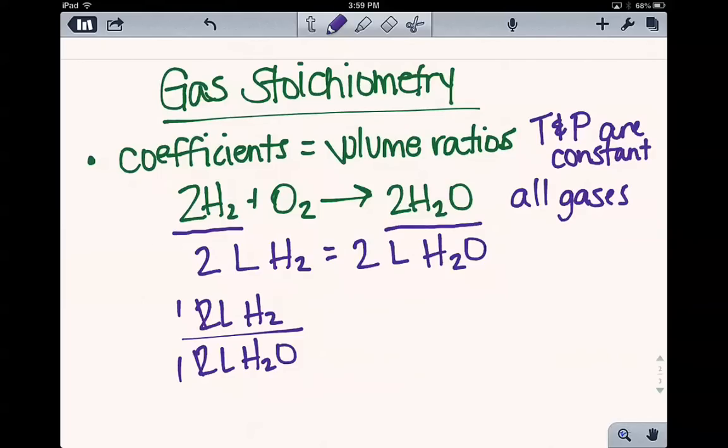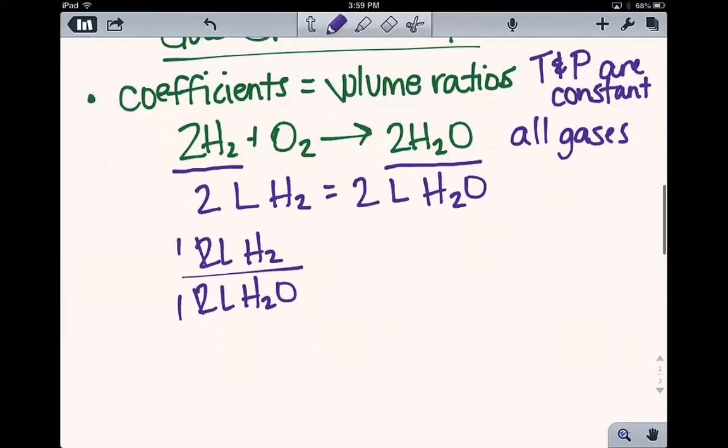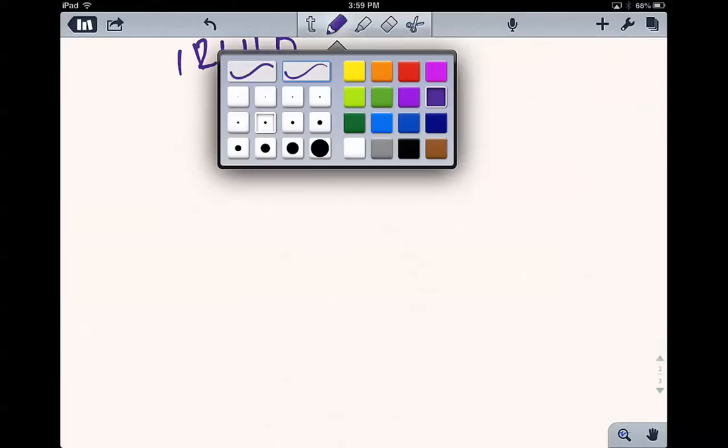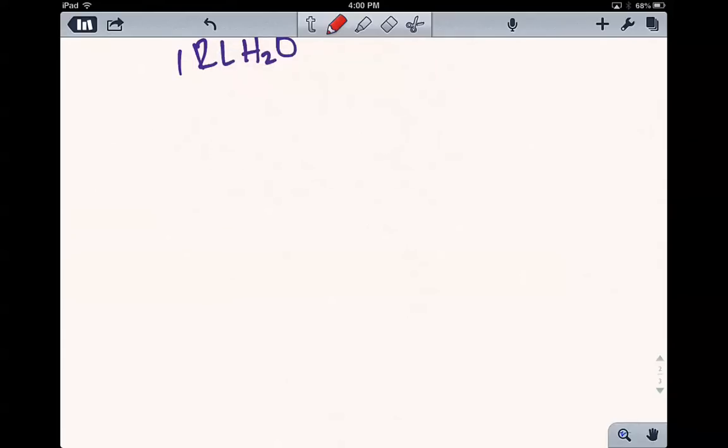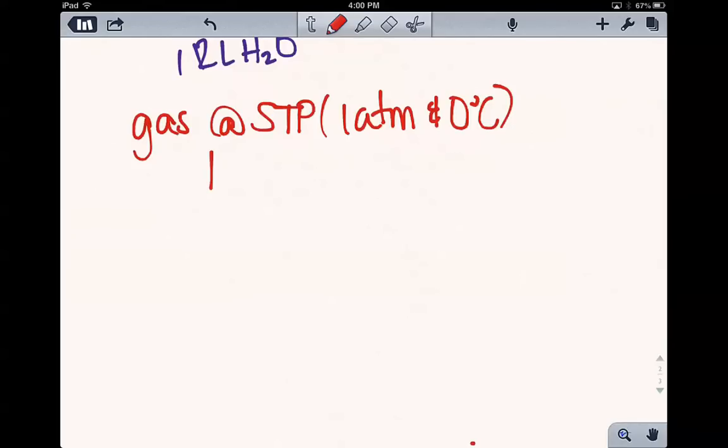Now what if we don't know that temperature and pressure stay constant, but we do know the condition around one gas? Well, if we know that our gas is at STP, and that would be standard temperature and pressure of one atmosphere and zero degrees Celsius or you could say 273 Kelvin, if we know the gas is at STP, then we know that one mole of that gas is going to have a volume of 22.4 liters.